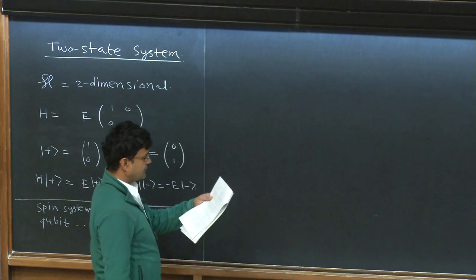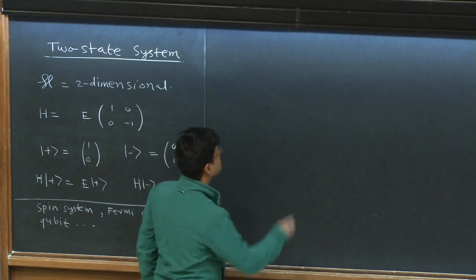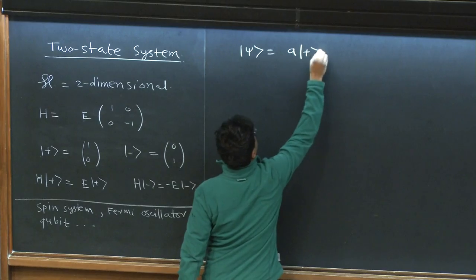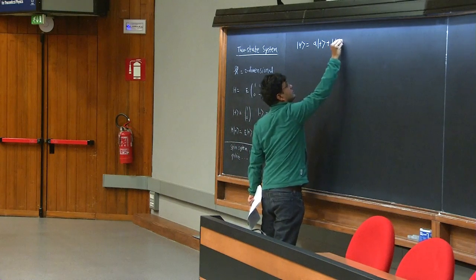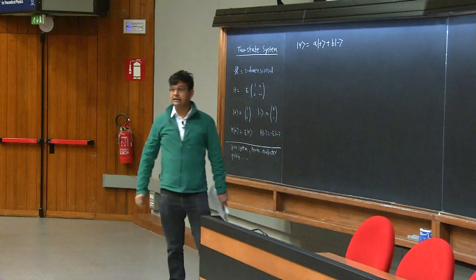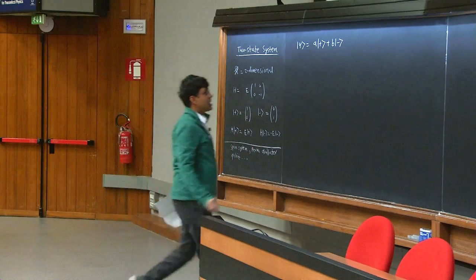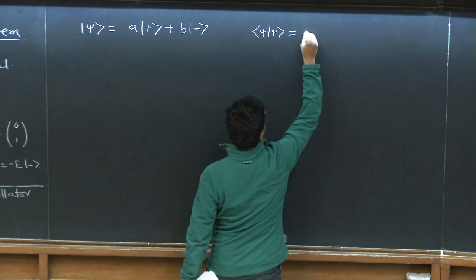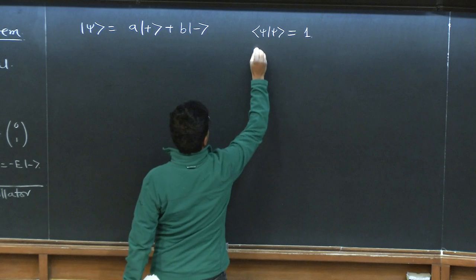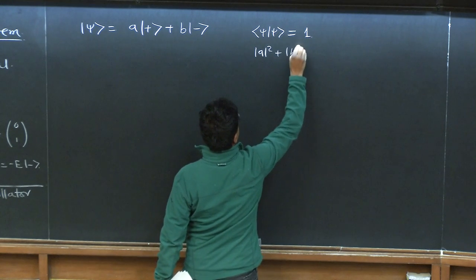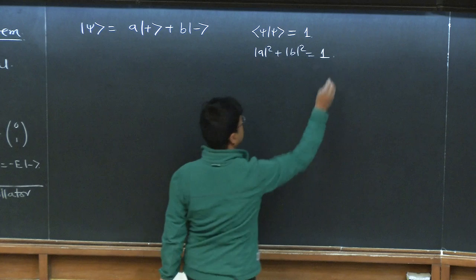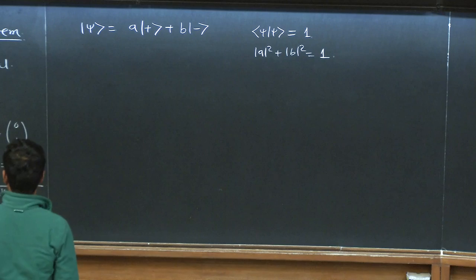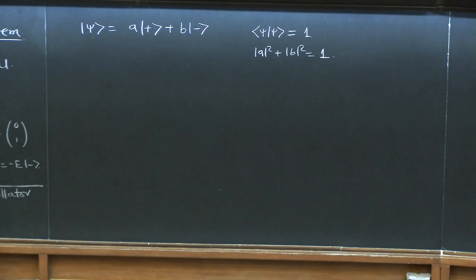We can consider all the general axioms we had discussed. If I have a general state |ψ⟩, I can write it as a linear combination: a|+⟩ + b|−⟩, taken to be unit norm, so a² + b² = 1. This state is clearly not an eigenstate of the Hamiltonian.